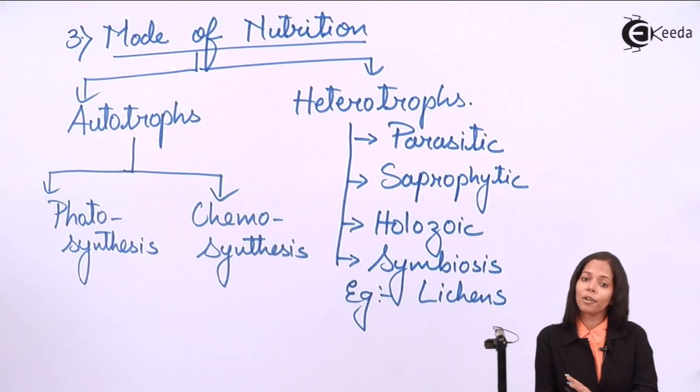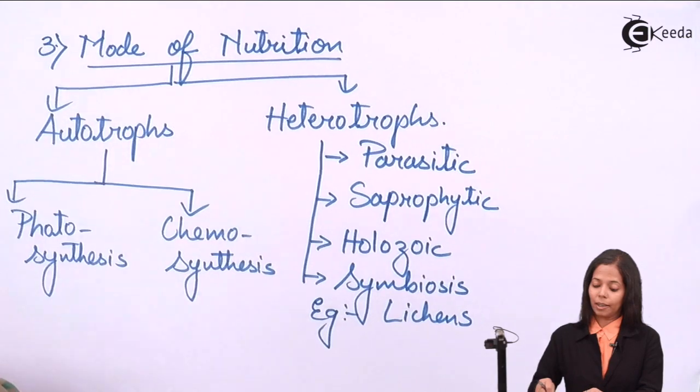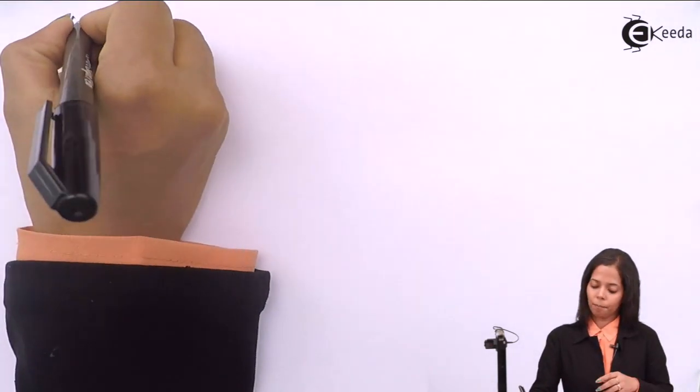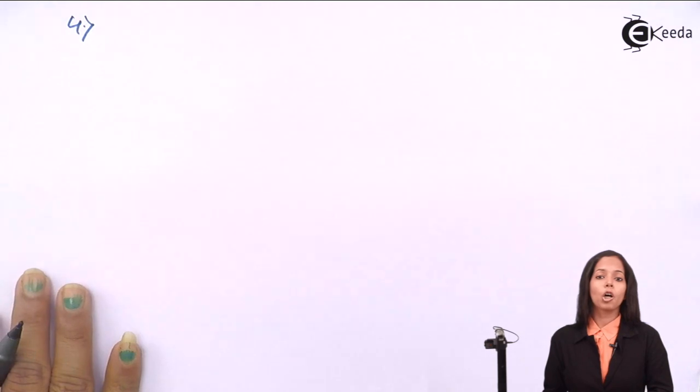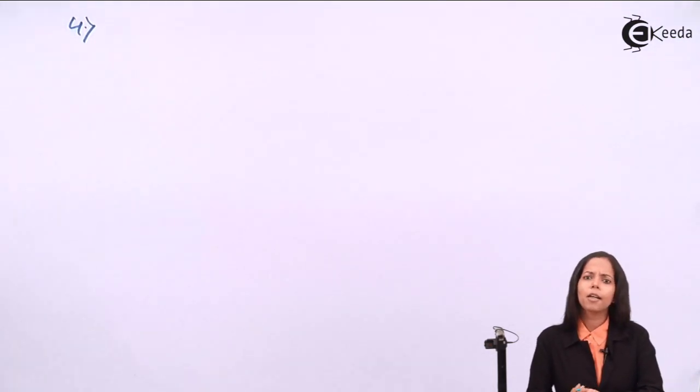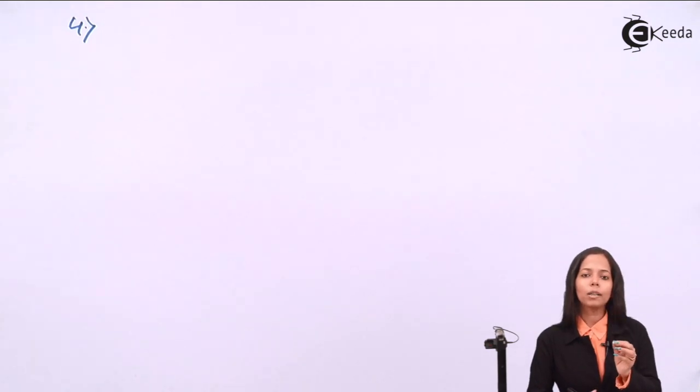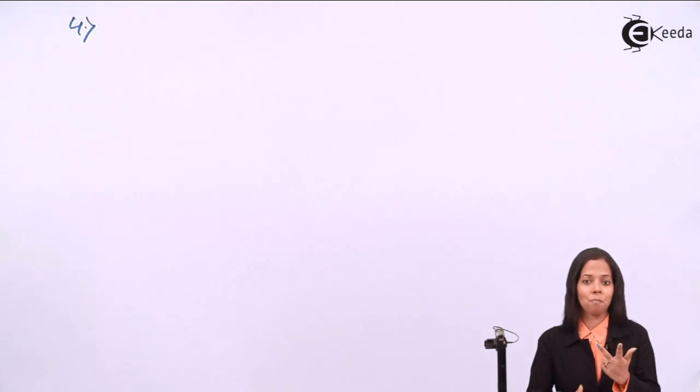The fourth criteria is ecological lifestyle. What is ecological lifestyle? In an ecosystem, what is our position? First of all, what are the positions present in an ecosystem? The positions which are present in an ecosystem are producer, consumer, and decomposer. So out of these three, which one are we? That decides the ecological lifestyle.